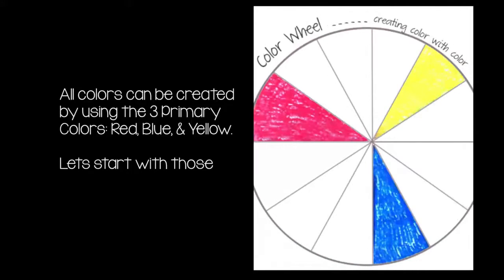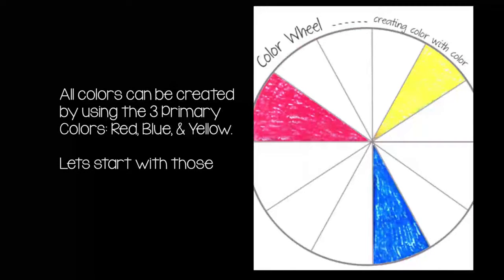All colors can be created by using three primary colors. Those colors are red, blue, and yellow. To begin, let's fill those three in.